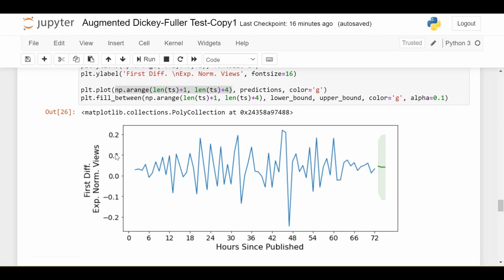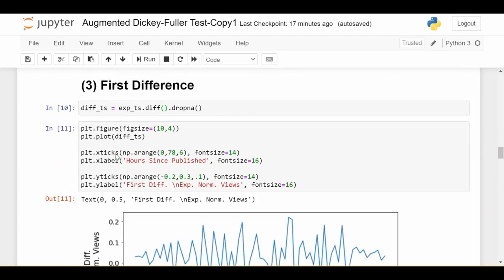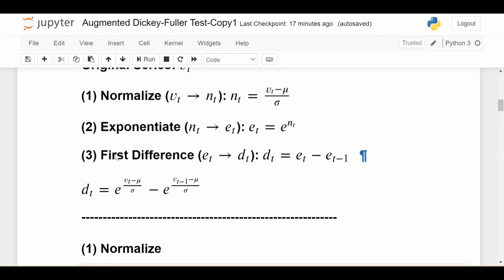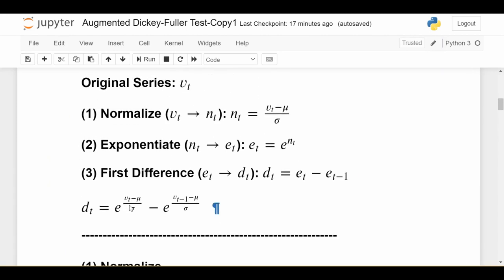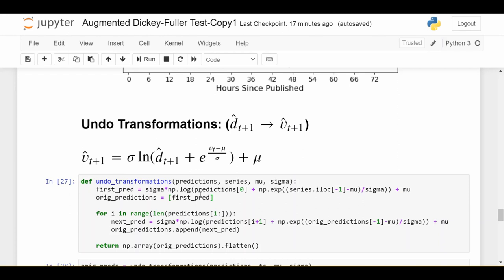The honest answer is that you need to look at the mathematical form of the transformations that you did, and then carefully write code to undo those transformations. The mathematical function that takes us from our original series V_t to our transformed series D_t is this function here. It looks sort of complicated, but yours might be less or more complicated.